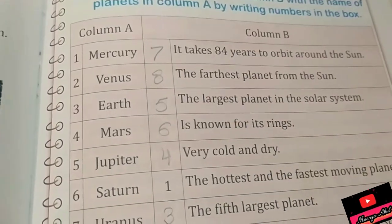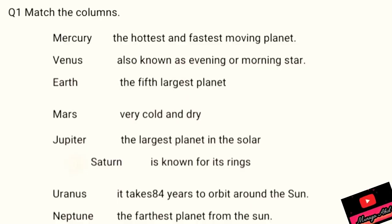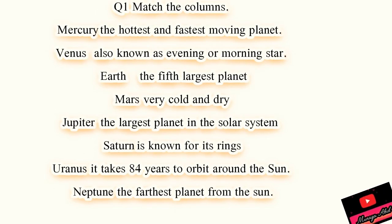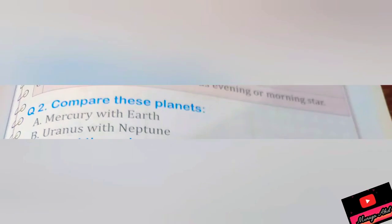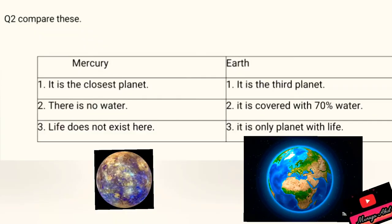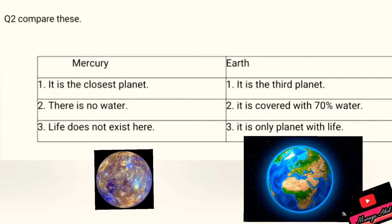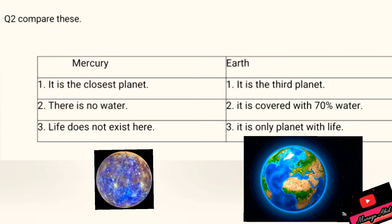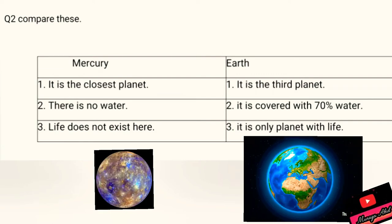And the farthest planet from the Sun is Neptune. We have to solve this matching problem. You can also write the answer by pausing this video. Now our second question is compare these planets Mercury with Earth. So first of all we have to remember the sequence.